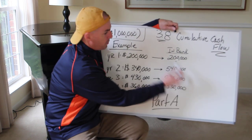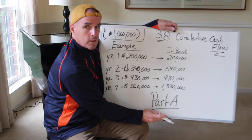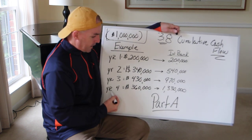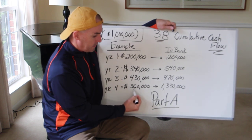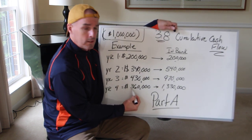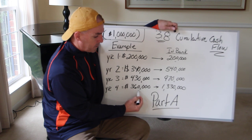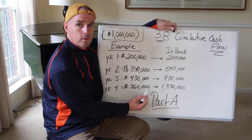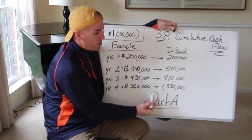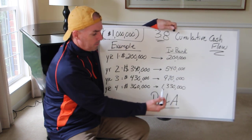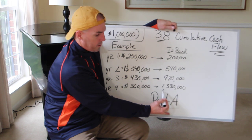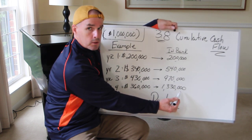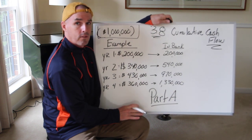At the end of that third year, the Bills will have $970,000 in the bank. They still haven't made their million dollars back. So now they've got to keep me for another year. And in that fourth year of my contract, I hurt my knee, I recover, and I only bring in $360,000 to the Buffalo Bills. At the end of year four, the Bills have made back $1,333,000 off of their investment after four years.